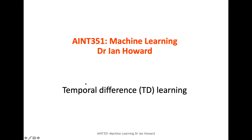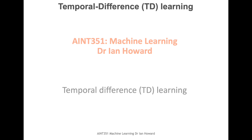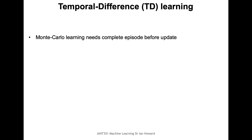Let's consider another approach to reinforcement learning known as temporal difference learning, or TD learning. Monte Carlo learning needs a complete episode in order to update the value of a state. You start in a state, take a pseudo-random walk until you reach the goal state, and then you know the gain from the start. You look back through the entire path and update your value.